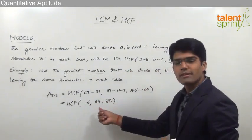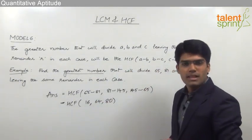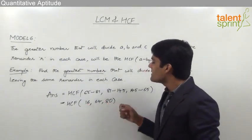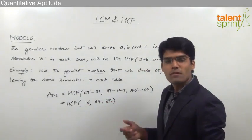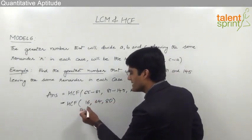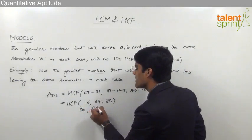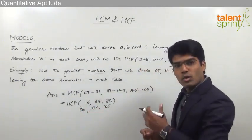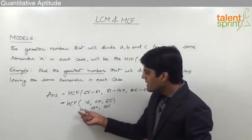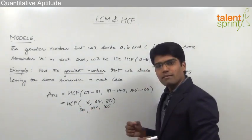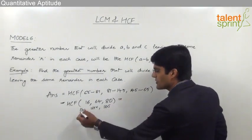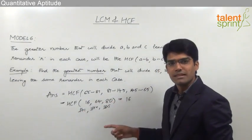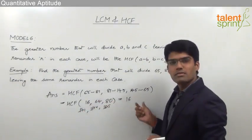Now as you can observe these numbers 16, 64, and 80 are all multiples of 16. For example, 16 into 1 is 16, 16 into 4 is 64, and 16 into 5 is 80. As I have already mentioned in one of the previous models, whenever we find multiples in this manner we can directly say that the answer here has to be 16 itself. Why? Because all these numbers are the multiples of 16 and 16 is also one of the numbers, so the highest common factor directly can be taken as 16.